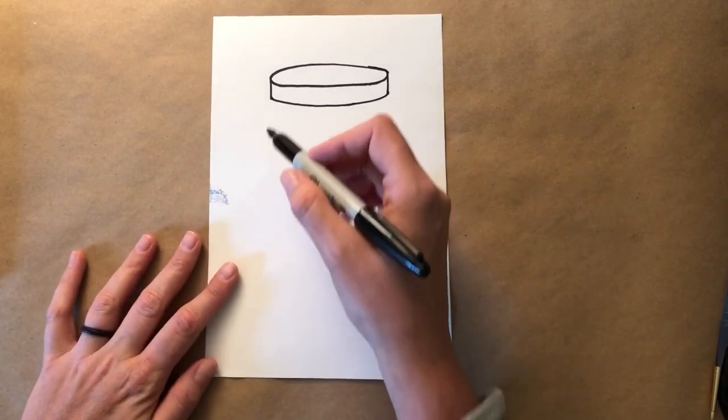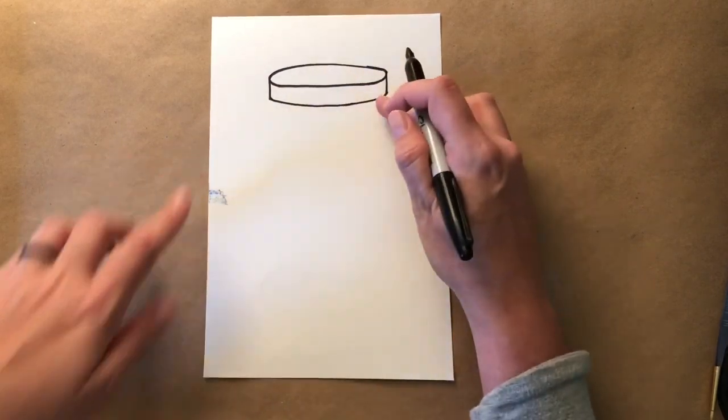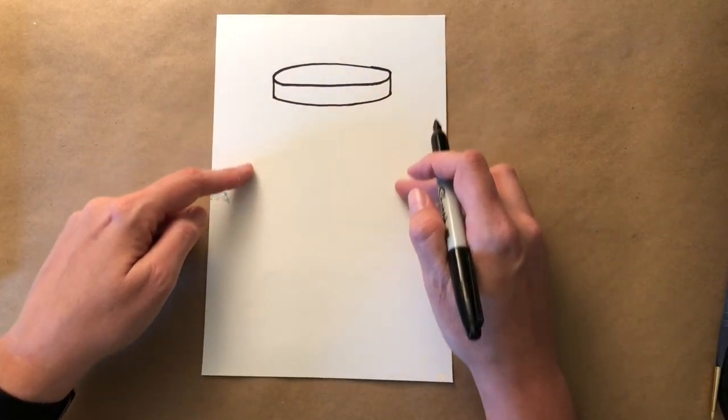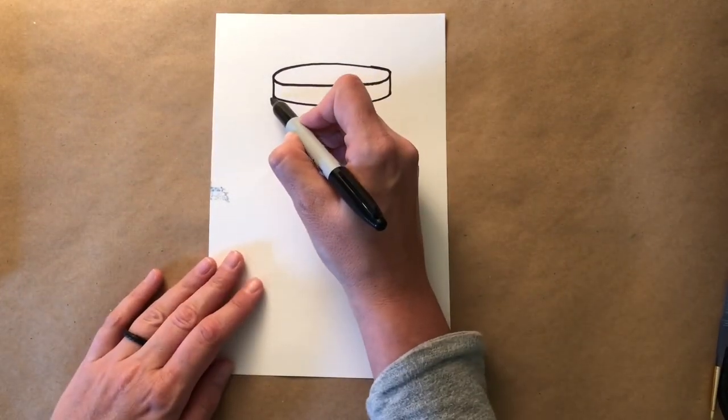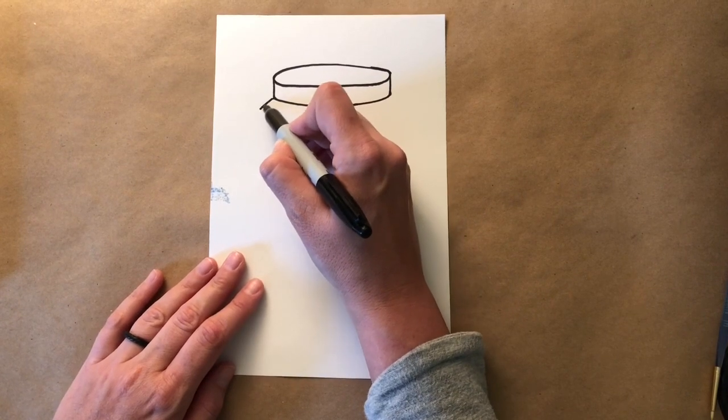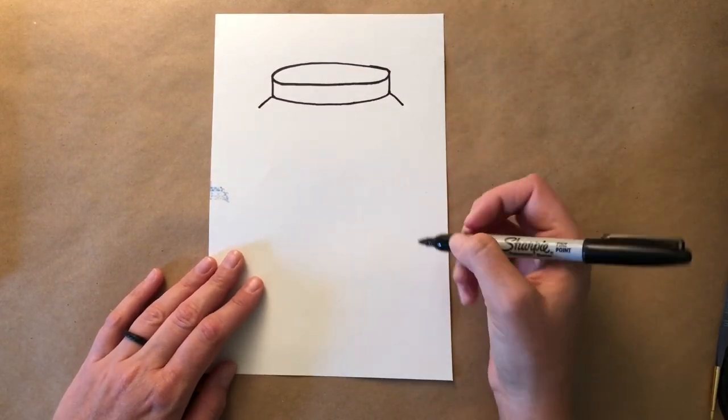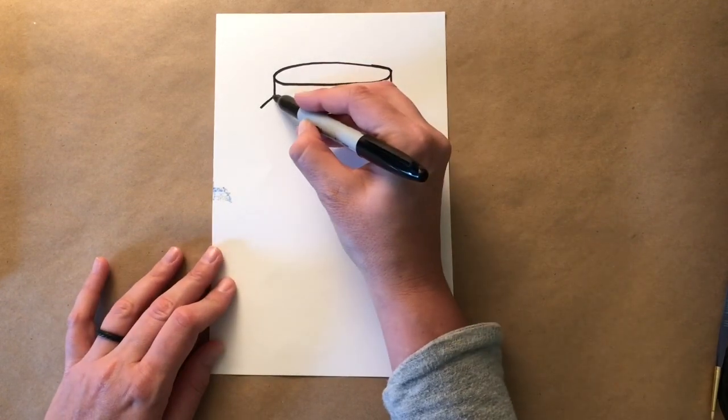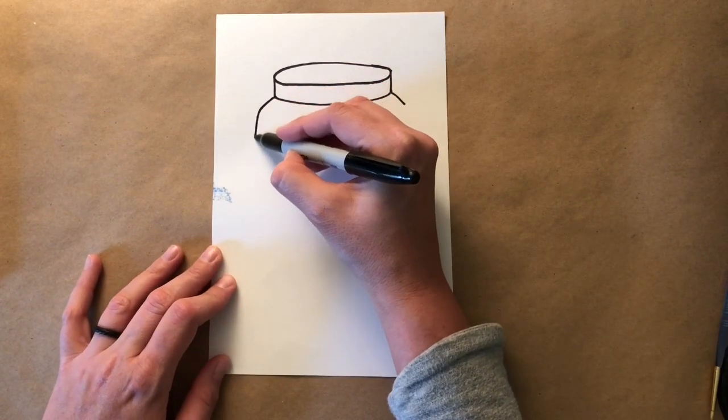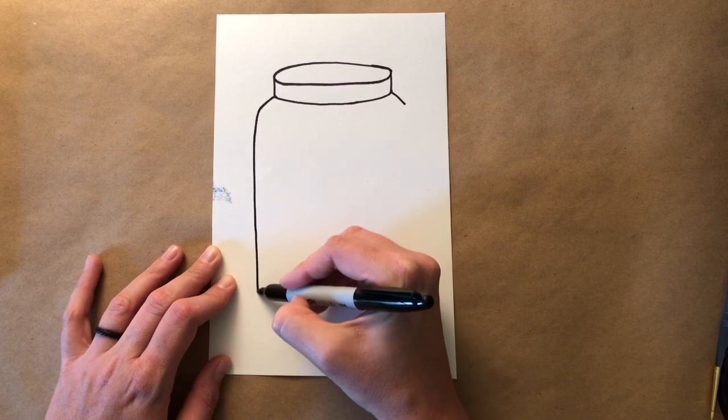And then we want our jar to be symmetrical, so that means the same on both sides. So my jar is going to come out a little bit and go down. I'm going to go out to the side on both sides so it's the same on both sides or symmetrical.